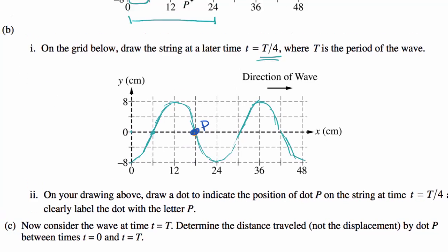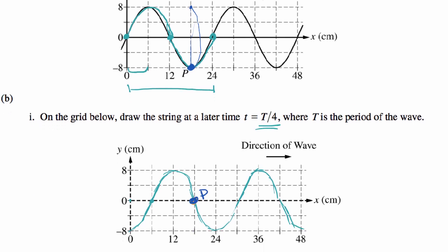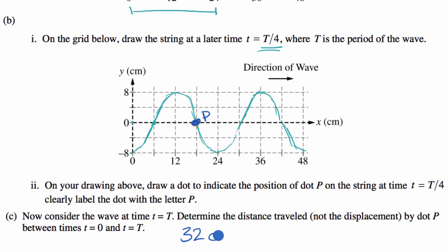Last but not least, consider the wave at time T equal to a full period. Determine the distance traveled — not the displacement — by dot P between T equals zero and T equals capital T. At T equals zero, P is at its maximum displacement. Over a full period, P moves all the way up to positive 8 centimeters, then all the way back down. The displacement would be zero since it returns to its starting point. But the distance traveled is 16 centimeters up and 16 centimeters back down, giving a total distance of 32 centimeters.